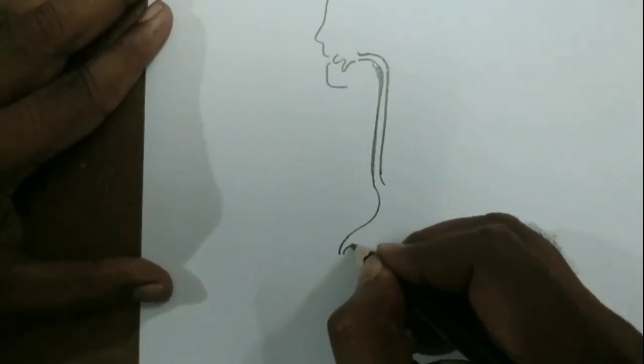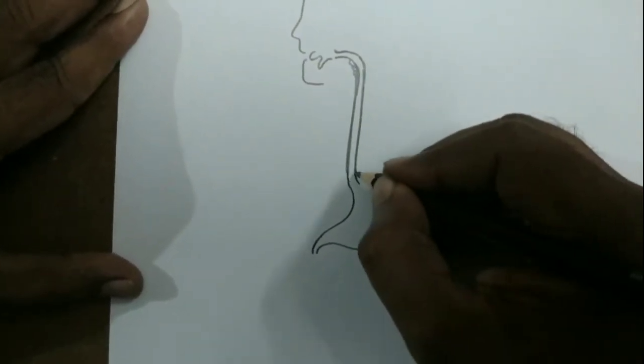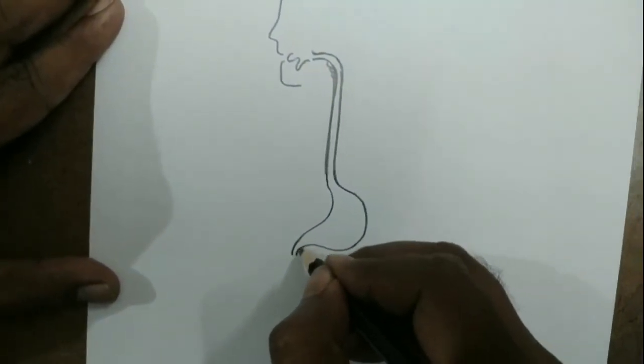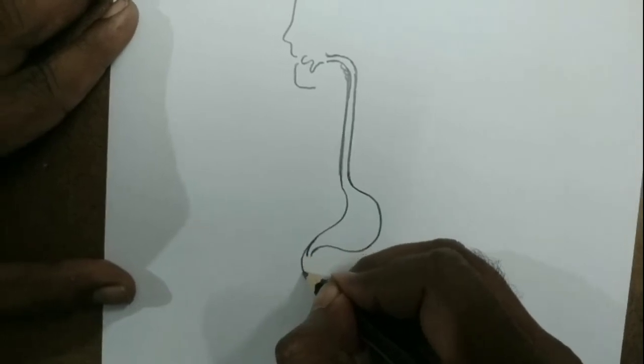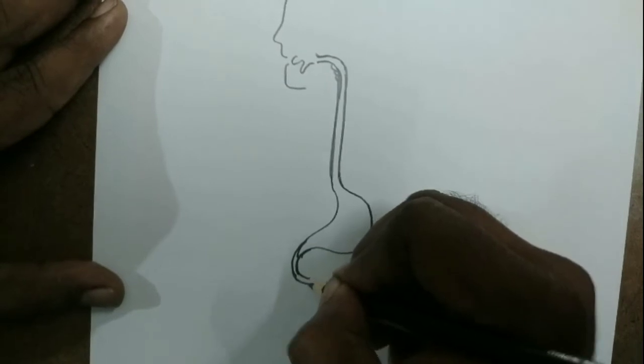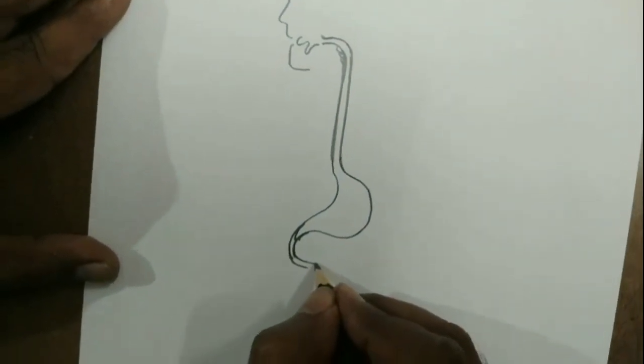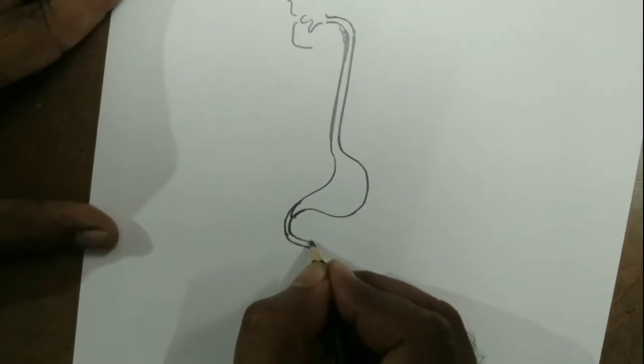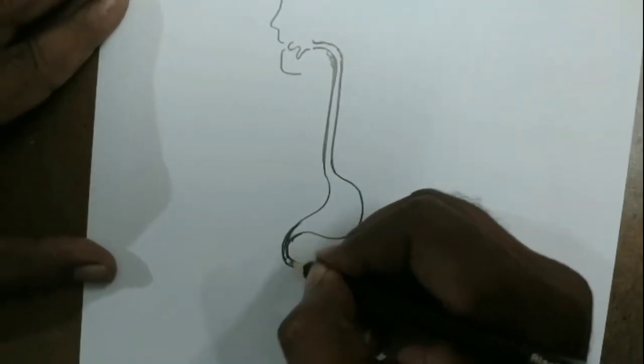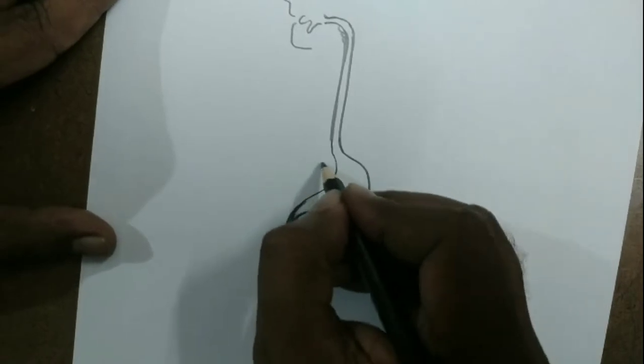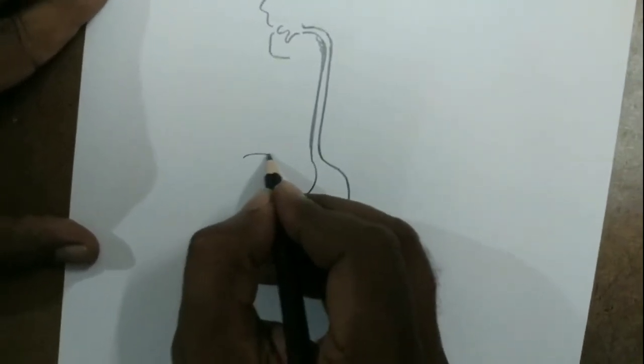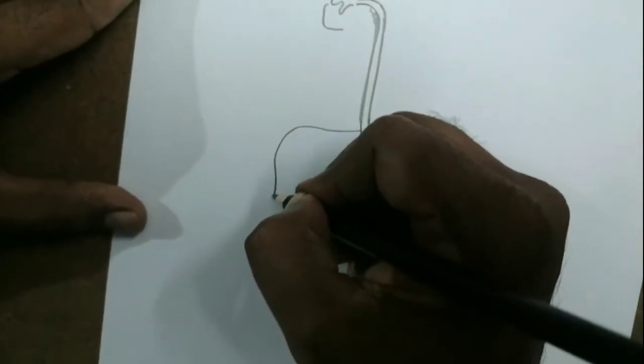Now we have to draw the stomach like this. Then the stomach is connected to the duodenum. It is a U-shaped structure, you have to draw like a U-shape. From this we have to draw the liver and pancreas. First of all, we have to draw the liver.